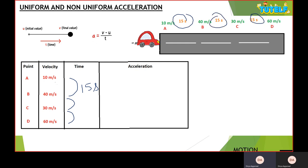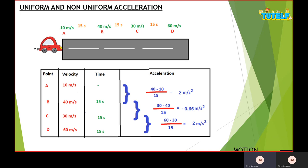We now check whether the conditions for uniform acceleration are met. First, it is going in a straight line — yes. Second, the time interval is fixed at 15 seconds — yes. Third, is there an equal amount of increase or decrease in velocity? Initially there is an increase of 30 m/s, then a decrease of 10 m/s, and then again an increase of 30 m/s. So there is no equal increase in the velocity of the moving car.